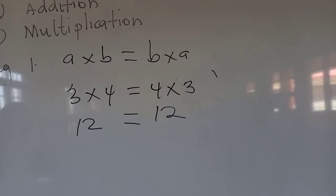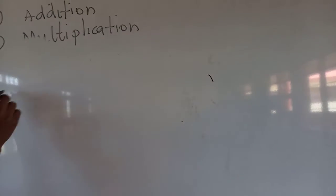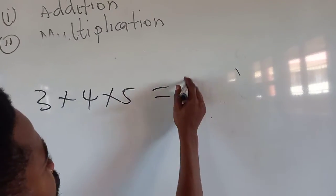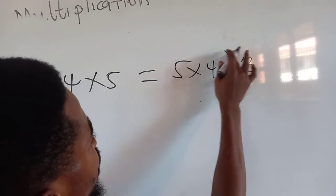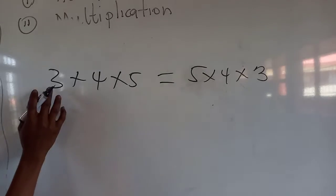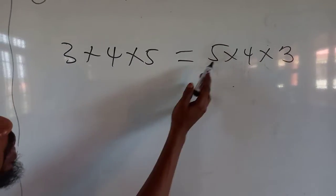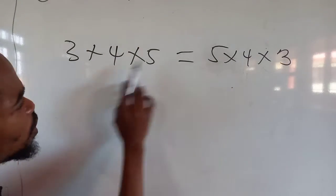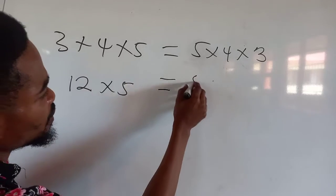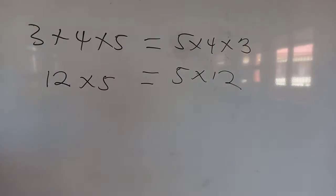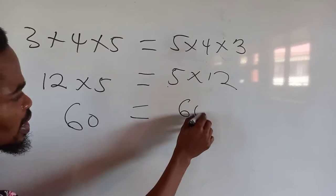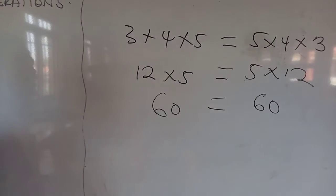We can also look at two or more numbers: three times four times five equals five times four times three. The numbers have changed order — five comes first, followed by four, and three is last. Three times four gives us twelve, times five gives us sixty. And five times four times three also gives us sixty. Therefore multiplication is commutative.